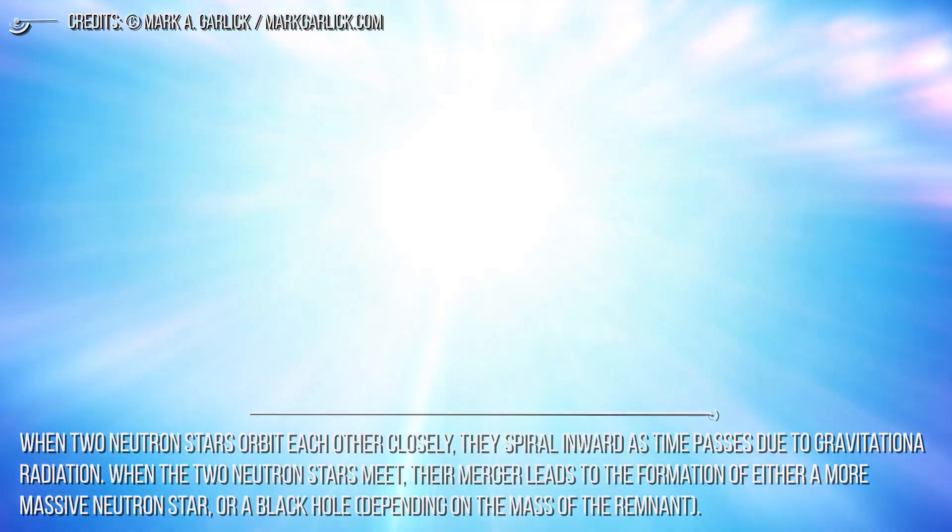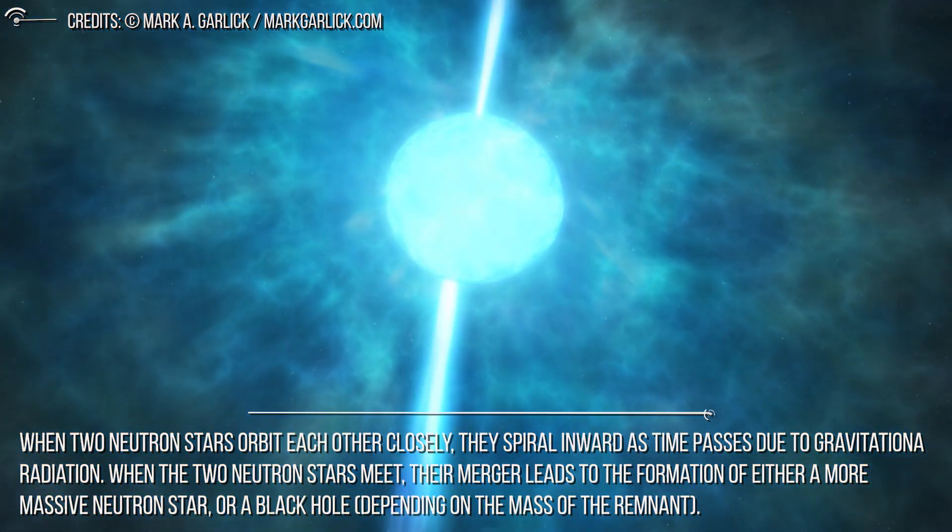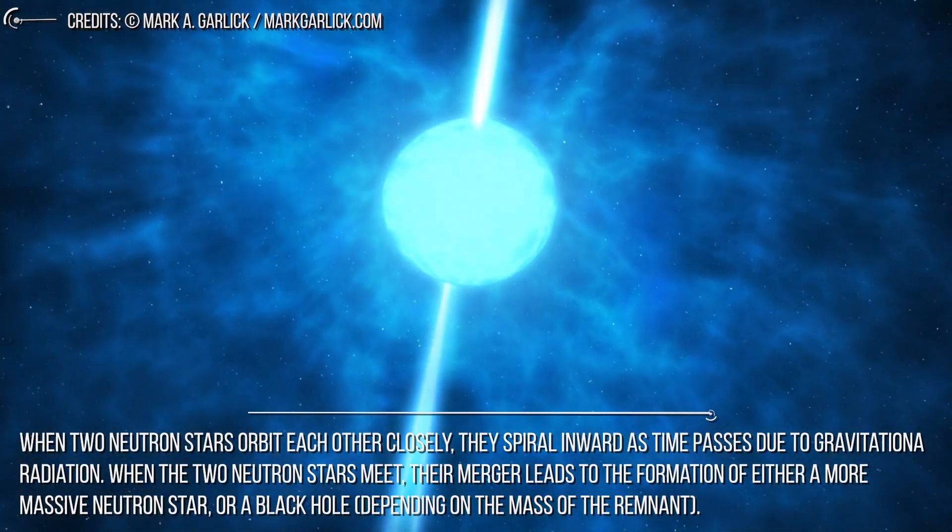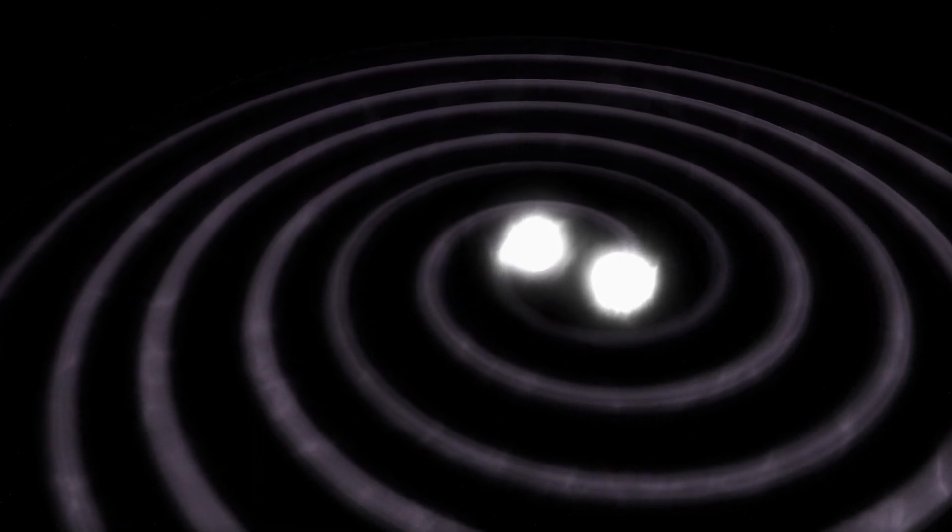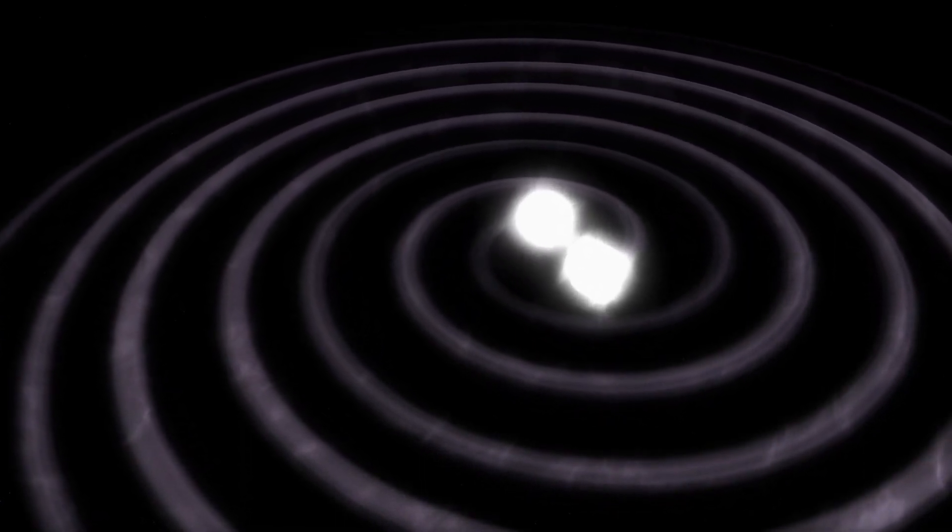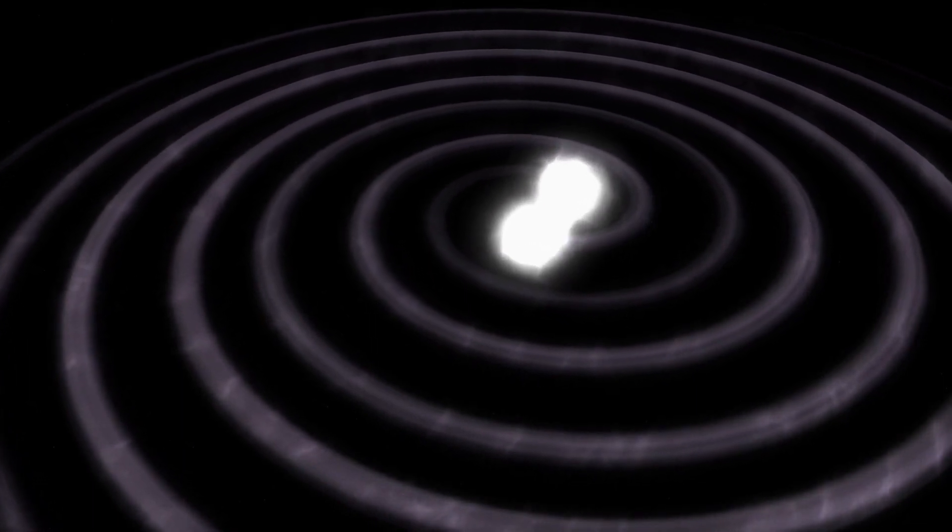When the two neutron stars meet, their merger leads to the formation of either a more massive neutron star or a black hole, depending on the mass of the remnant. The first such observation, which took place in August of 2017, made history for being the first time that both gravitational waves and light were detected from the same cosmic event.